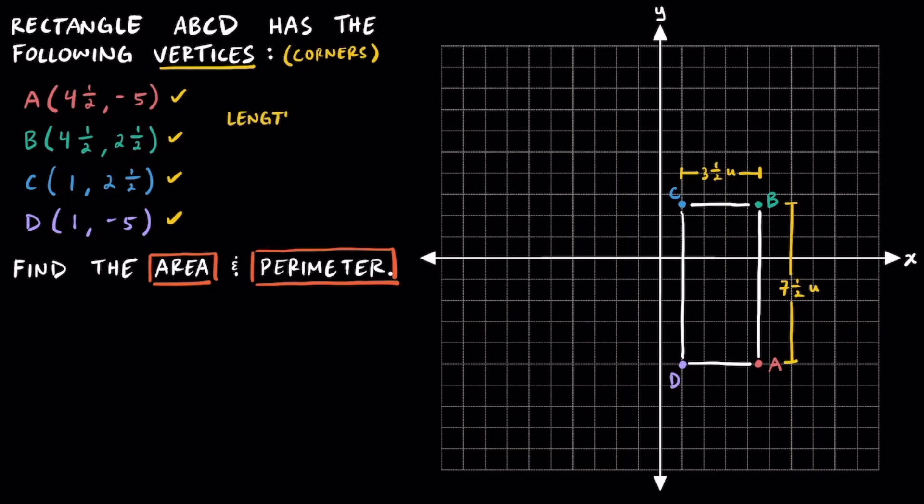So now that we figured out the length of the rectangle is seven and a half units, and the width is three and a half units, we can go ahead and find the area and perimeter.